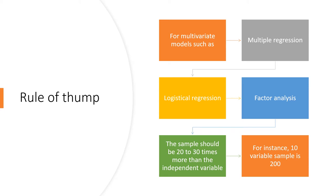Generally, there are rules of thumb for determining sample size. When preparing multivariate models such as multiple regression, logistic regression, or factor analysis, references and citations suggest the sample size should be 20 to 30 times more than the number of independent variables. The dependent variable depends on the independent variables. For example, if the number of independent variables is 10, the sample size would be 10 multiplied by 20, which is 200. We can follow this rule of thumb.